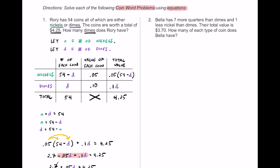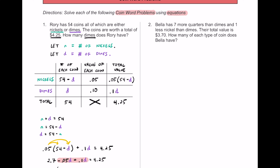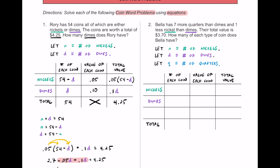Now that we've finished number one, let's take a look at number two. Bella has seven more quarters than dimes and one less nickel than dimes. Their total value is $3.70. The question is, how many of each type of coin does Bella have? Let's define our variables: n for the number of nickels, d for the number of dimes, and q for the number of quarters. Then we'll make a table just like before, with one extra row for quarters since we have three coin types.